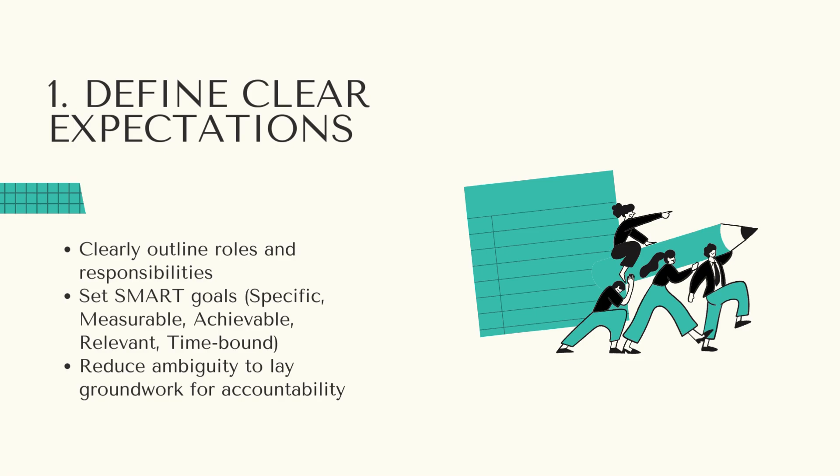When expectations are clear, team members understand their responsibilities and know what success looks like. And when they know what success looks like, they can use their creative thinking and problem-solving abilities to achieve that success. This clarity reduces ambiguity and lays the groundwork for accountability.